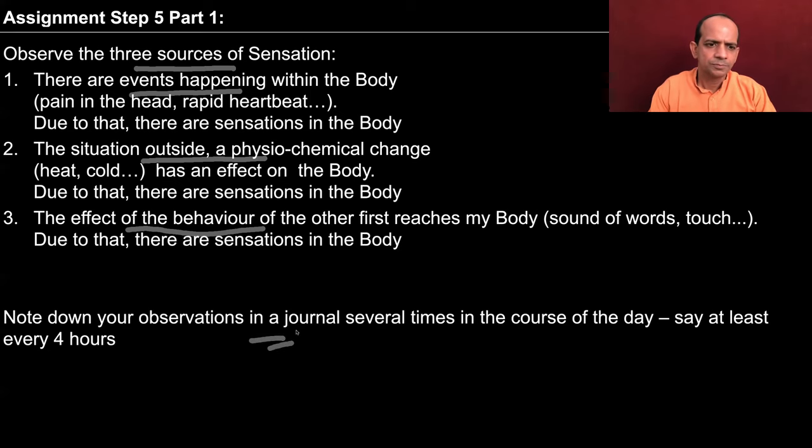We will go on to study this further. So in this week, you have to observe the three sources of sensation in your day-to-day life and activities, and try to find out what is happening there. In today's session, we tried to observe how the self associates meaning to the sensation — the sensation may be the same but we may associate different meanings to it, or we may associate the same meaning to different sensations, or the meaning may vary from time to time and place to place. Try to observe the three sources of sensation this week, and then in the next session we will study further how we associate meaning to the sensation. Thank you.